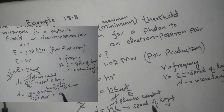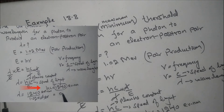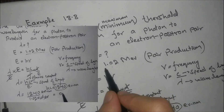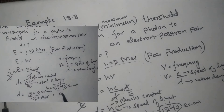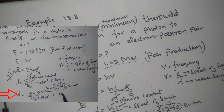The value of hc is equal to 1240 electron volt nanometers. Substituting into the equation with energy equal to 1.02 mega electron volts — where mega equals 10 to the power 6 — lambda equals 1240 divided by 1.02 times 10 to the power 6 electron volts.